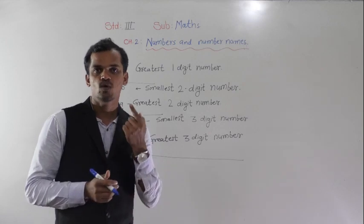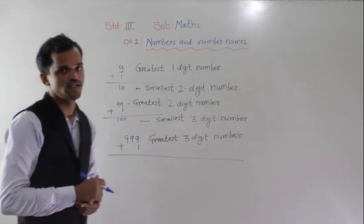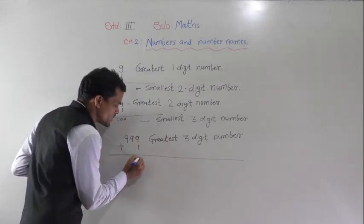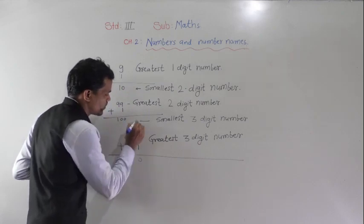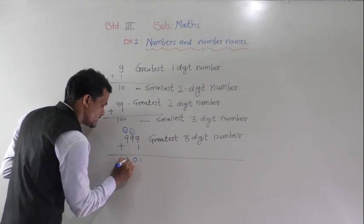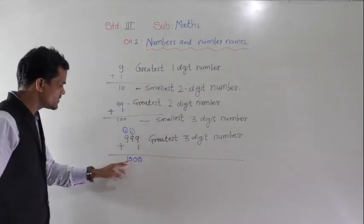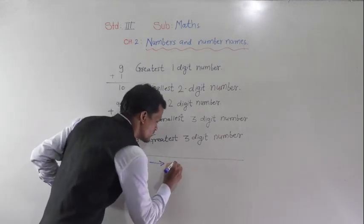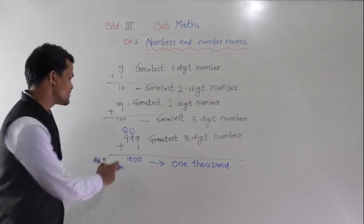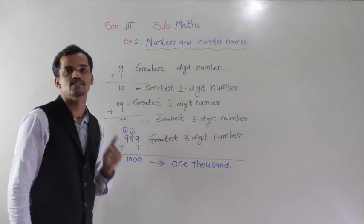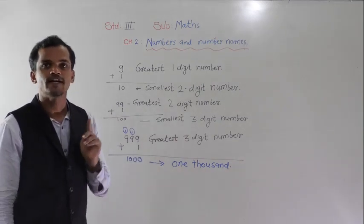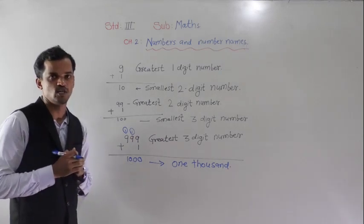Then what will be the result if we add 1 into 999? So I am adding 1 into 999. See here: 9 plus 1 is 10, so 0 right here and 1 carry forward. Then 9 plus 1 is 10 and 1 carry forward. Again 9 plus 1 is 10. We get 1000, and this 1000 is the smallest 4-digit number — it has 4 digits.